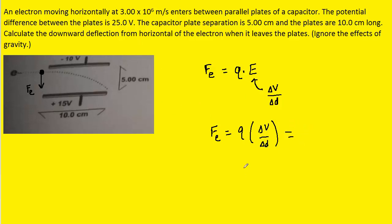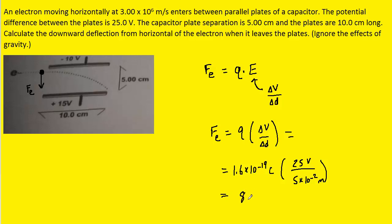We plug in the charge of the electron, which is 1.6×10⁻¹⁹ coulombs, times the potential difference of 25 volts, and then divide by the plate separation, making sure to convert to meters by multiplying by 10⁻². When we do this, we get 8×10⁻¹⁷ newtons. This is the electric force acting on the electron.